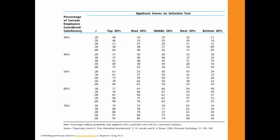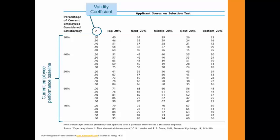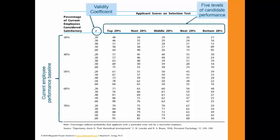Let me explain what these columns and rows represent. The R you see represents the validity coefficient — we said we'll be using 0.30. On the left-hand side you'll see 30%, 40%, 50%, and so on — that's the current employee performance baseline. On the top you'll see five columns, representing the five different segments you created for the candidate performance levels. Now let's go through and read the table using the numbers I provided.